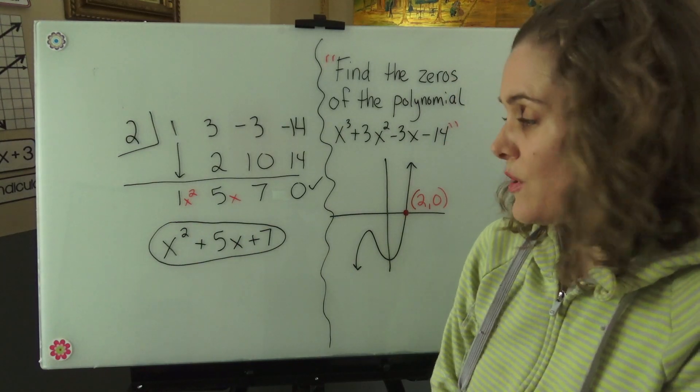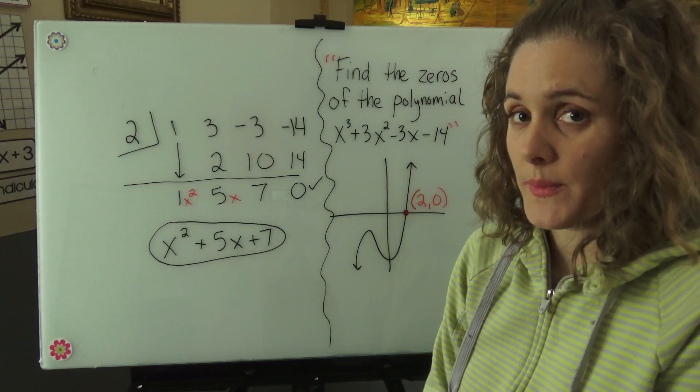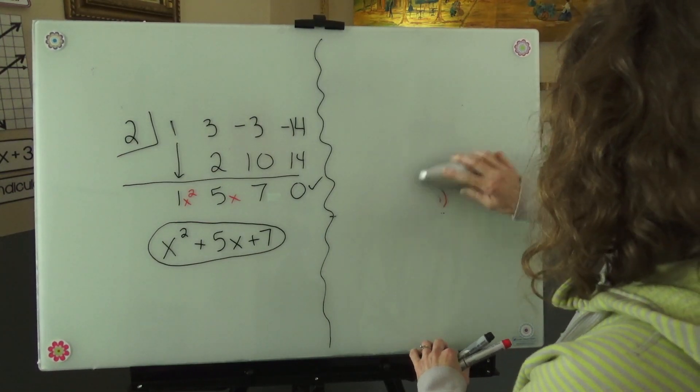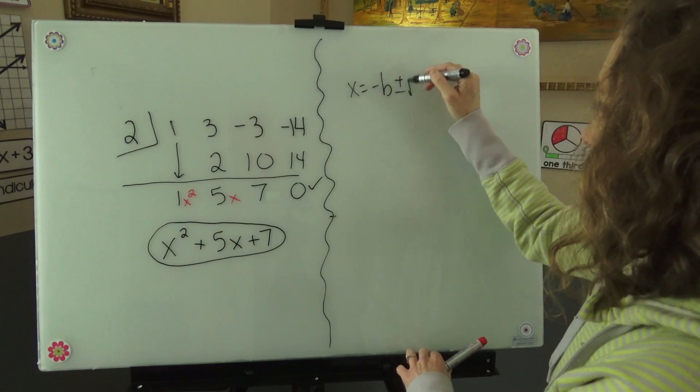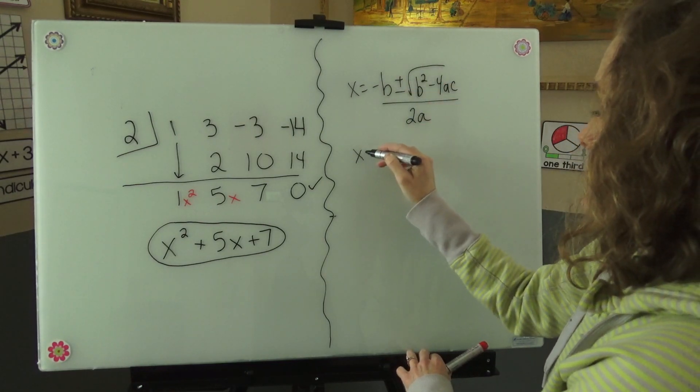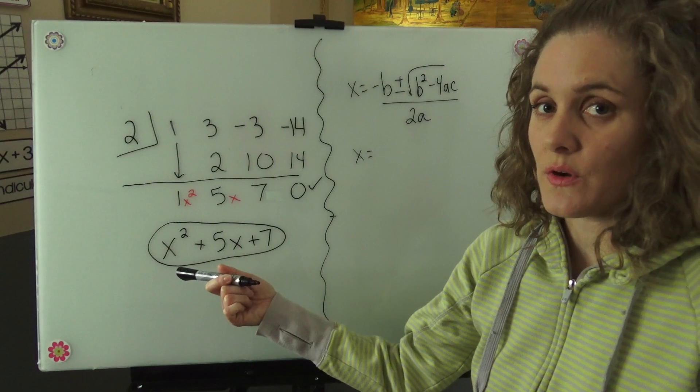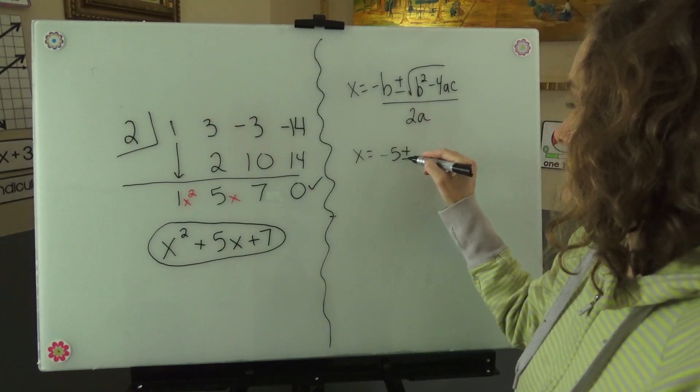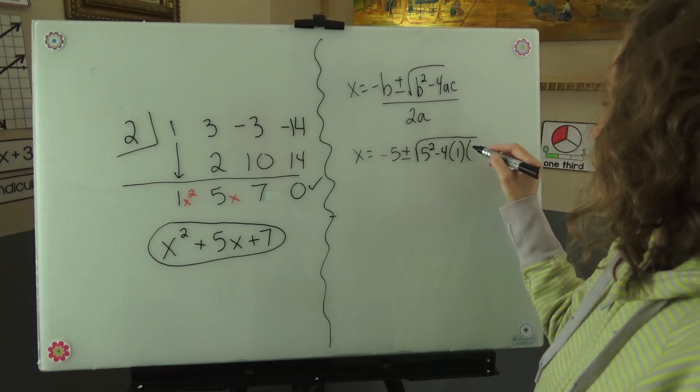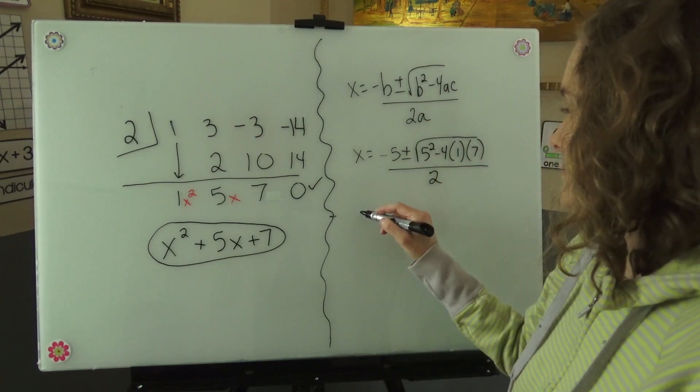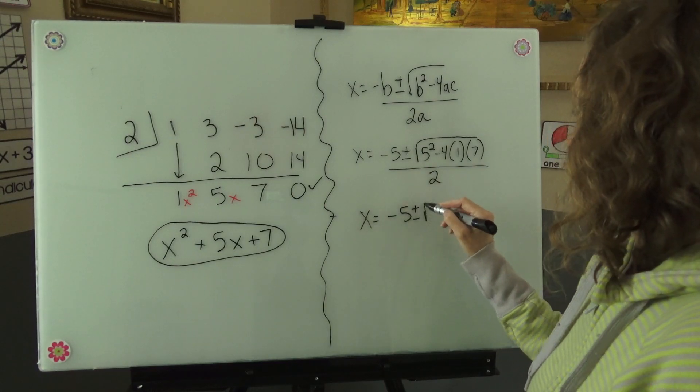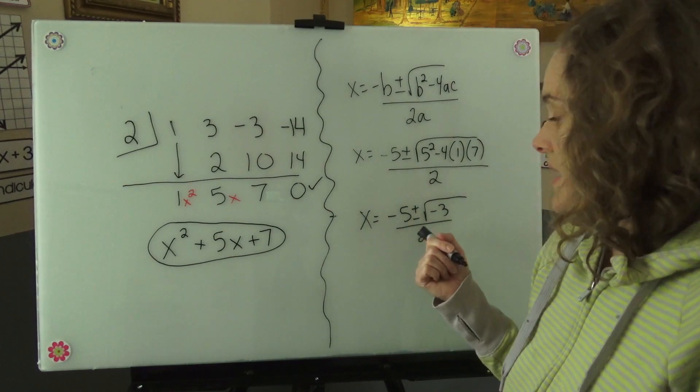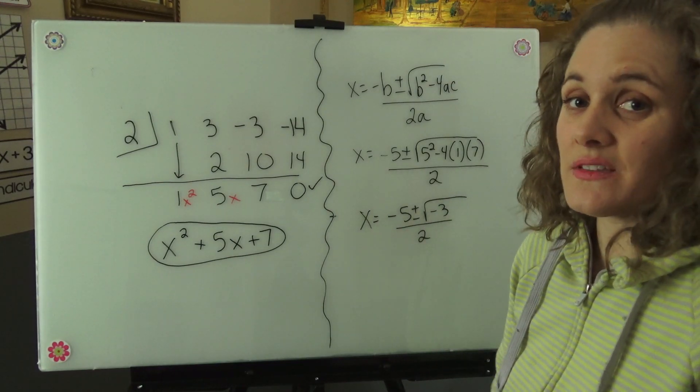Now to find the zeros, we're going to need to use the quadratic formula on this because it doesn't factor. I'm going to just use the coefficients of our trinomial to fill in the quadratic formula. And now I'll just solve. This negative three under the radical sign tells me that these zeros are imaginary.